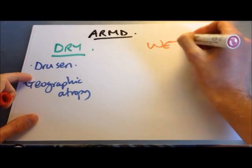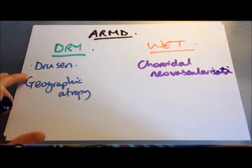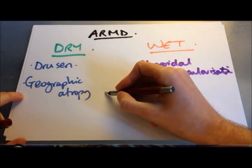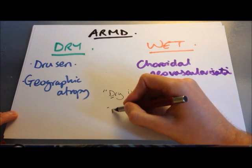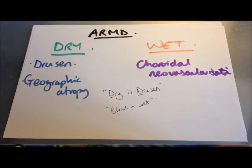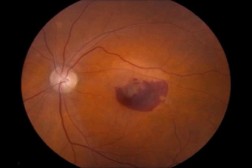To summarise: wet macular degeneration is due to choroidal neovascularisation. A useful mnemonic: dry is associated with drusen — both start with D — and blood is wet. Fundus pictures of wet macular degeneration show subretinal haemorrhage superiorly and nasally of the macula, and a well-demarcated grey area. Another picture shows a more striking subretinal haemorrhage, just to illustrate the variety of presentations.